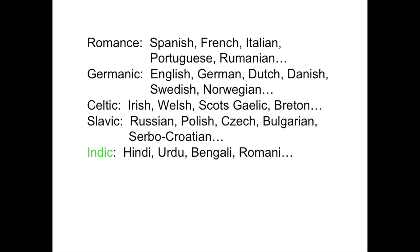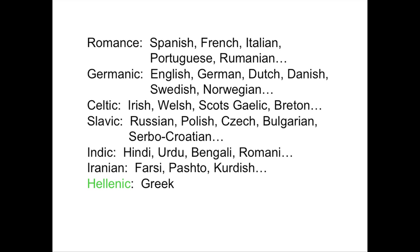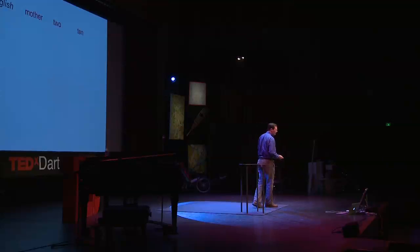In India — and not just in India — Urdu spoken in Pakistan, Romani spoken all over the world; these Indic languages are descended from the ancient language Sanskrit. The Iranian languages — not just in Iran — Farsi is modern Persian, Kurdish, Pashto in Afghanistan. Some languages don't have any close relatives; think of them as an only child. Greek has no brothers or sisters, so these are some language families of Europe and Asia.